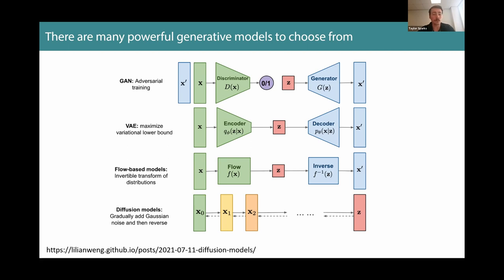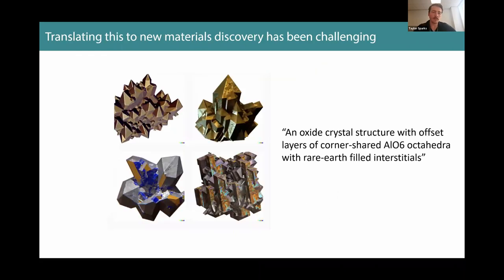I don't need to tell you how exciting it's gotten with the advent of ChatGPT and everything else. Generative informatics, generative machine learning has done some really powerful things. And one of the great things that we have, being in an adjacent field of chemistry, is taking advantage of the tools that are coming out of the CS field. For example, when it comes to generative models right now, there's just a wide variety of powerful things to choose from. That said, if you try and use them, this is a silly example, but if I go to Dolly right now and I say, give me an oxide crystal structure with offset layers of corner shared ALO6 octahedra and rare earth-filled interstitials, this is what it gives me back.